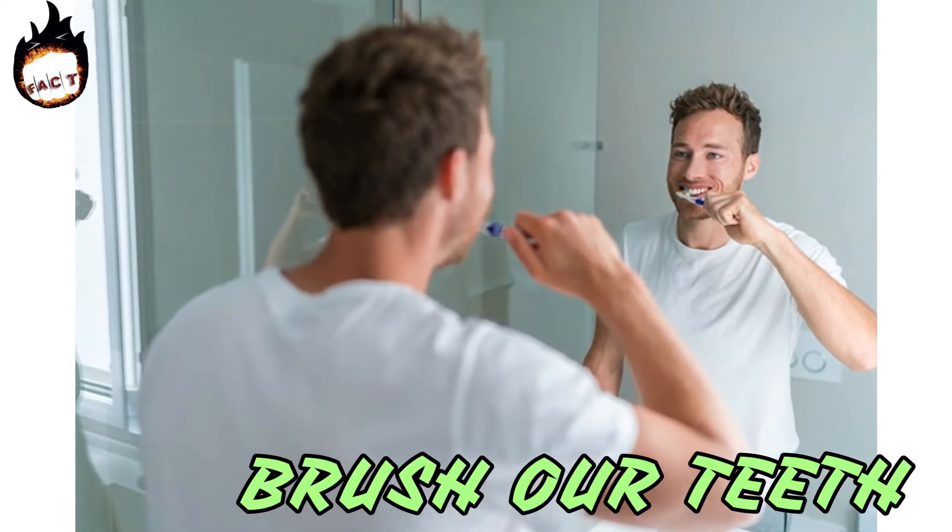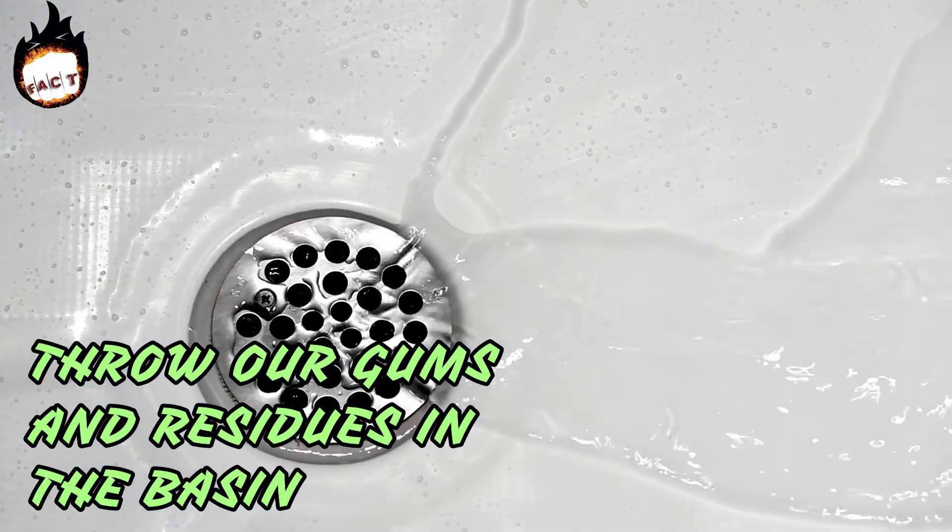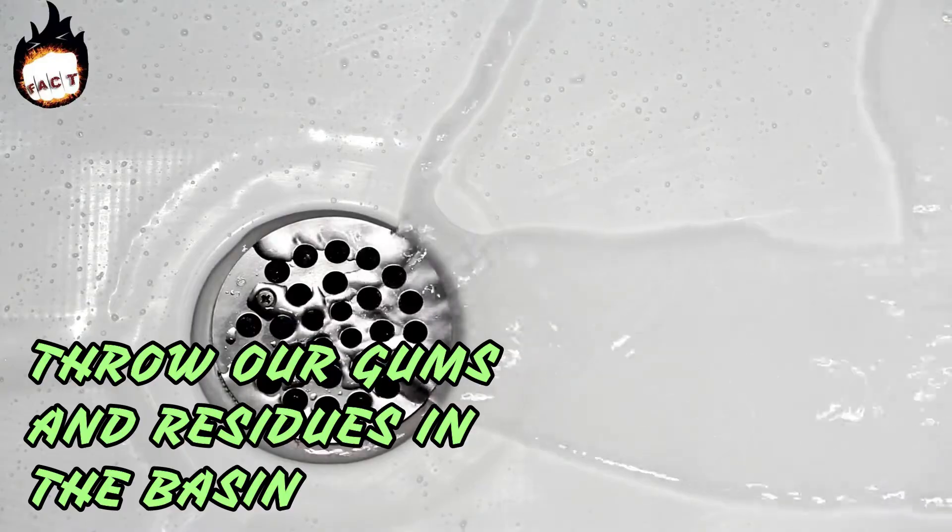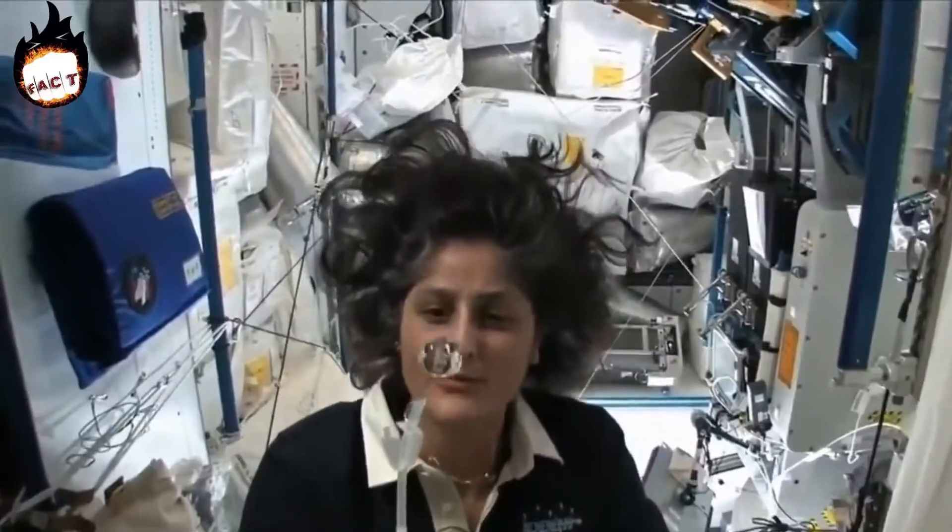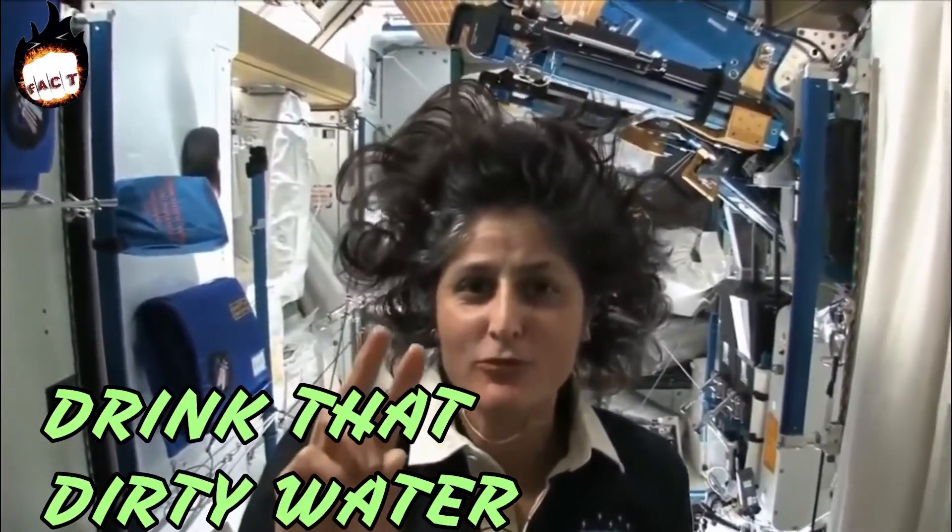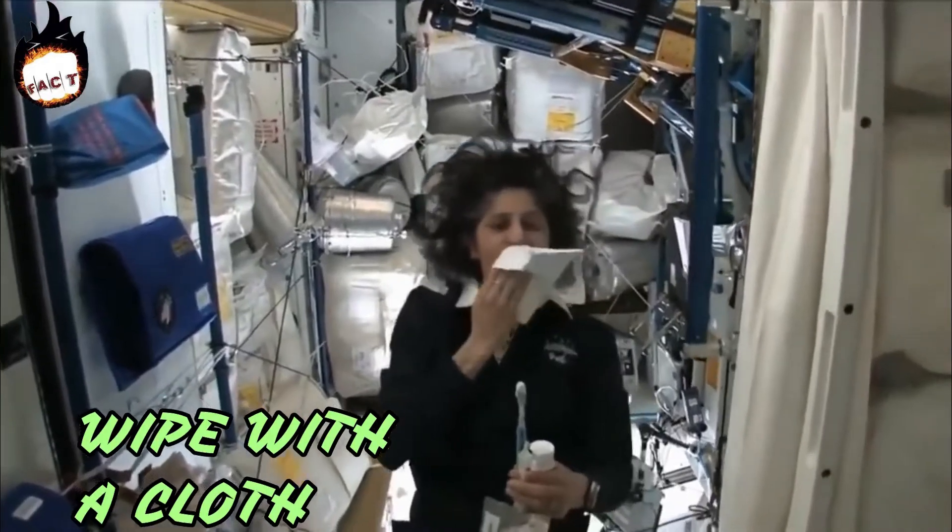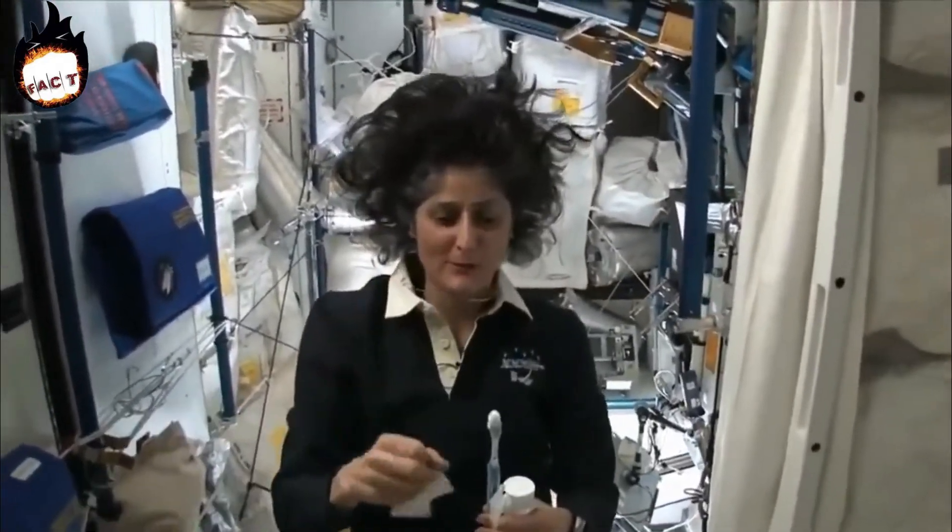Usually when we brush our teeth, we throw our gums and residues in the basin, but to do anything like this is not possible in space because this dirty water will keep flying high in the sky. To avoid this, people in space either drink that dirty water or wipe with a cloth.